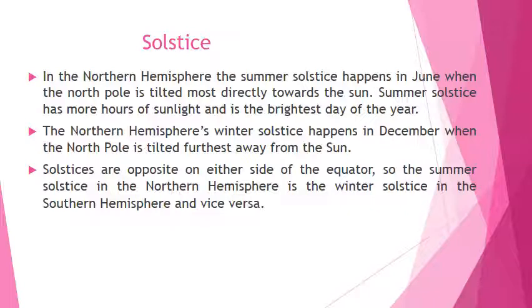In the northern hemisphere, the summer solstice happens in June when the north pole is tilted most directly towards the sun.